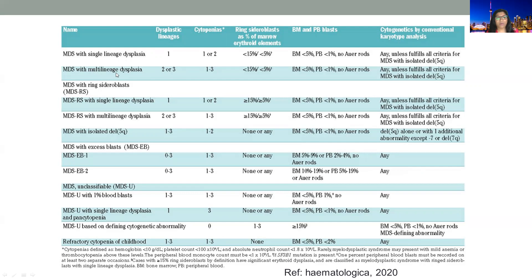If multiple lineages are involved, this is called multilineage dysplasia. These patients can have dysplasia in two or three different lineages, and the rest of the criteria remain the same. The next thing to look for is ring sideroblasts in the bone marrow aspirate. Now they need more than 15%, or more than 5% if the SF3B1 mutation is known. If this mutation is not done or not known, we still need more than 15% ring sideroblasts for this category, with bone marrow blasts less than 5% and no Auer rods.